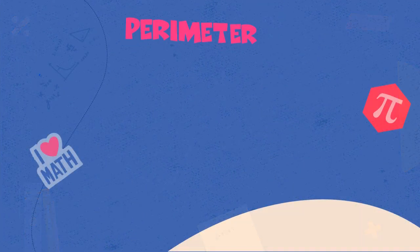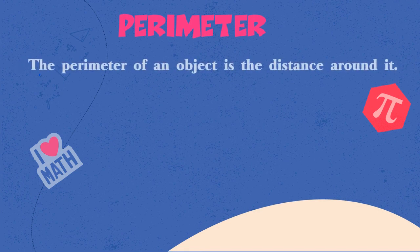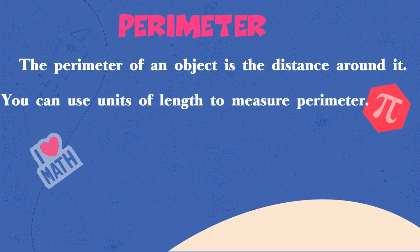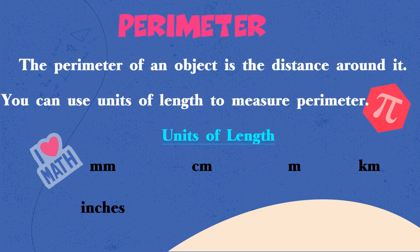Let's do a quick review. In our last lesson, we learned that the perimeter of an object is the distance around it. We also talked about the units of length used to measure perimeter. Some of these units include millimeters, centimeters, meters, kilometers, inches, feet, yards, and of course, miles.